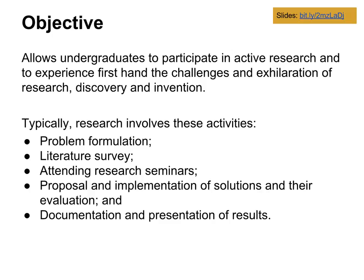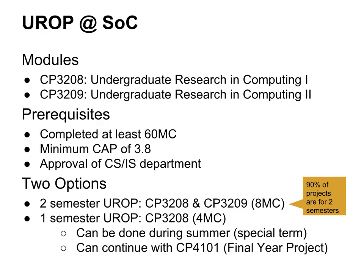In particular, the people grading your UROP — if you cannot tell them what you've done, then you fail, because research is only good when other people can understand it. In SOC, UROP comes in two flavors: there are two module codes, CP3208 and CP3209, for the first and second semesters of UROP. There are some general prerequisites, mostly to make sure you're on track for graduation, and that by doing research — which is less well-formed than a regular module — you're not going to be stuck in a hard place if you don't do too well.